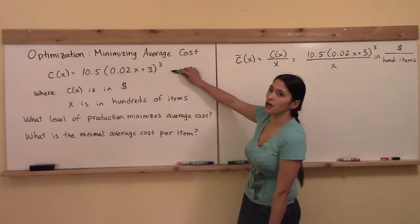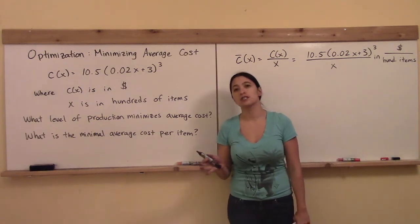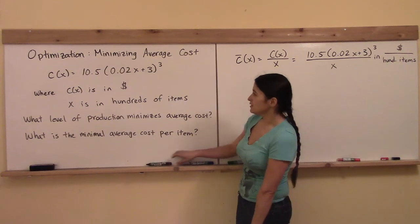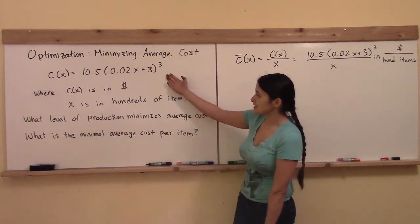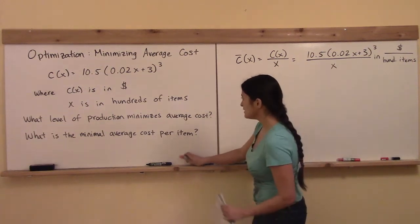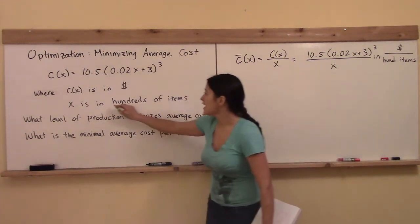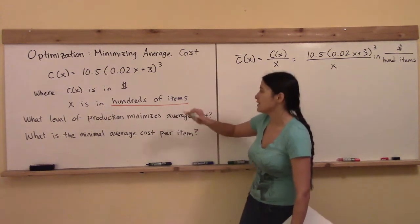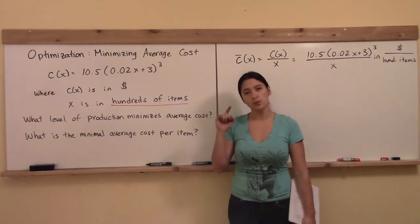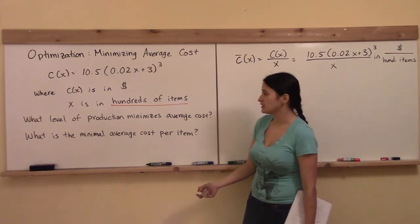Let's say that I've given you this total cost function right here. In this problem, I'm warning you, there's going to be a little bit of issues from the units. c(x) is given in dollars, but everybody take note — x is not in just single items. x is in hundreds of items. Watch out for something weird like that.